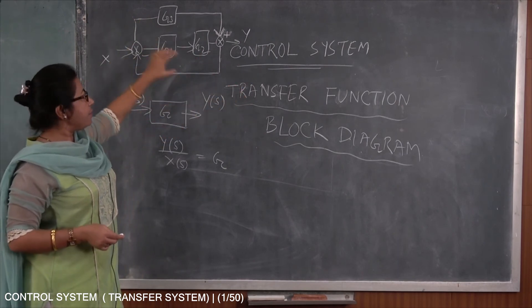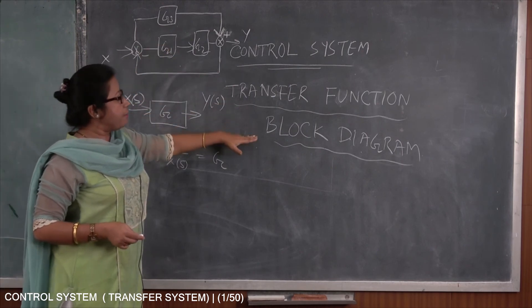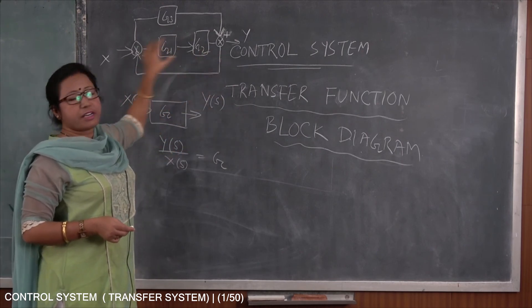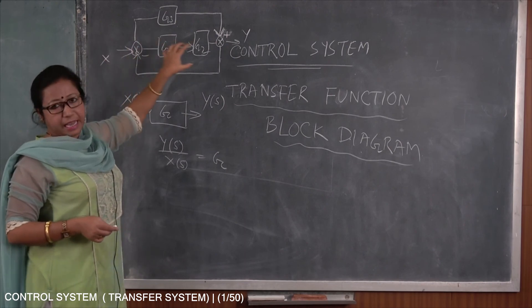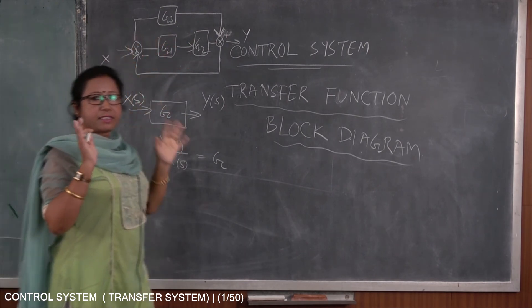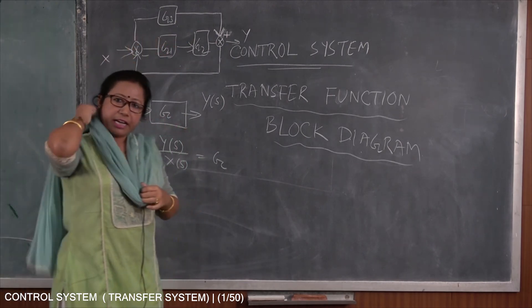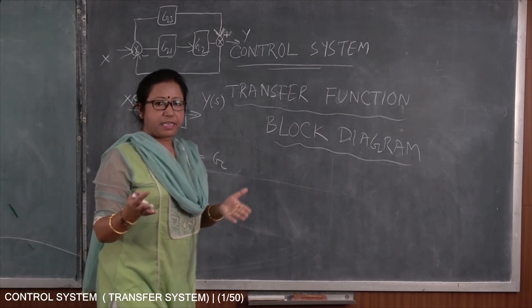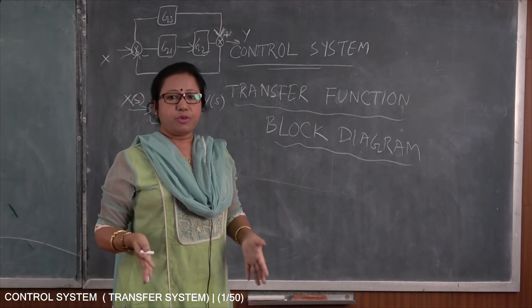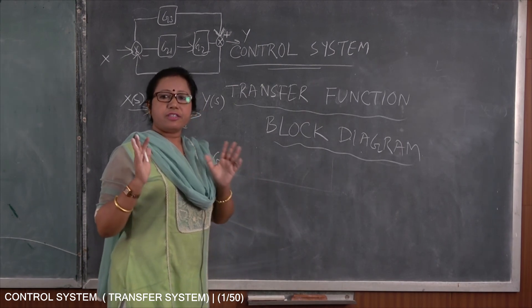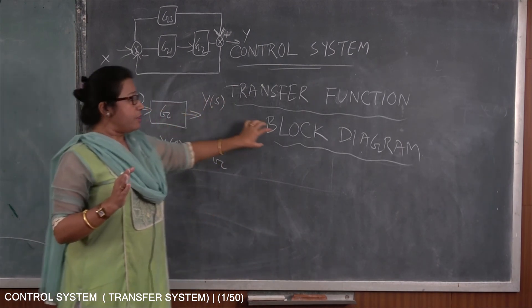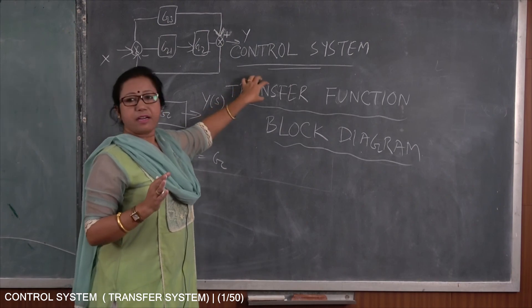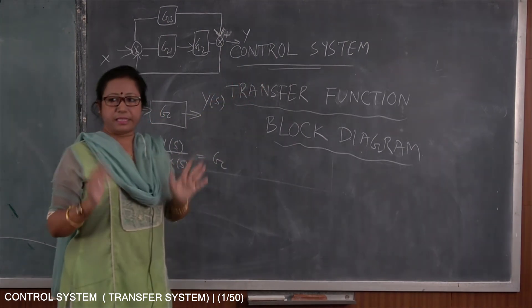So block diagram, after block diagram reduction, will get the overall transfer function. That means Y by X I can calculate if I maintain some rules. So block diagram has some definite rules. So in the next lecture I will discuss some rules of block diagram, how I can solve by the method of block diagram, how I can get the overall transfer function from a system.